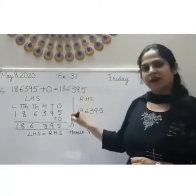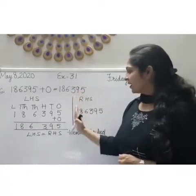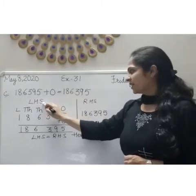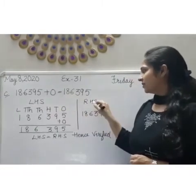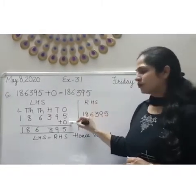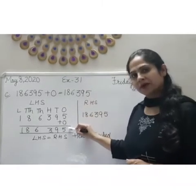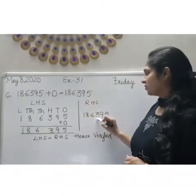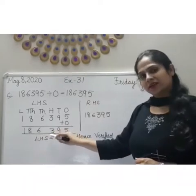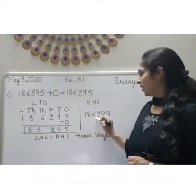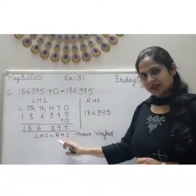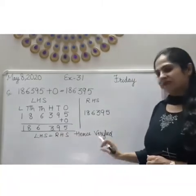Now let's verify it again. Divide the page in two parts — one is left hand side and other is right hand side. Now let's add 0 to the number. We will get the same number, that is 186395. It means LHS equal to RHS. Hence verified.